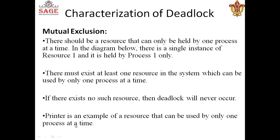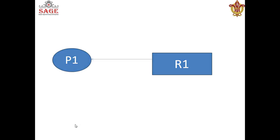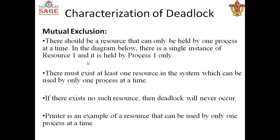The printer is an example of a resource that cannot be shared by processes simultaneously. In mutual exclusion, only one process can use a resource at a time. In this diagram, resource R1 is allocated to process P1, meaning P1 is the only one using this resource at that time, whether it is actively using it or not. There must exist at least one such non-shareable resource, otherwise deadlock will never occur.